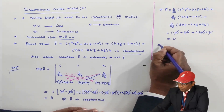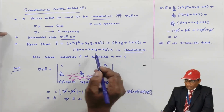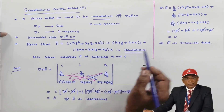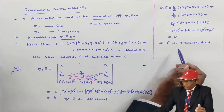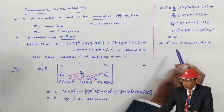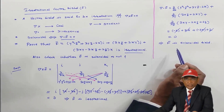This implies f̄ is a solenoidal field. Luckily, this vector field is both irrotational and solenoidal. However, this does not mean all fields are simultaneously solenoidal and irrotational — some fields may be irrotational but not solenoidal, and some solenoidal but not irrotational. We stop here. Thank you very much.